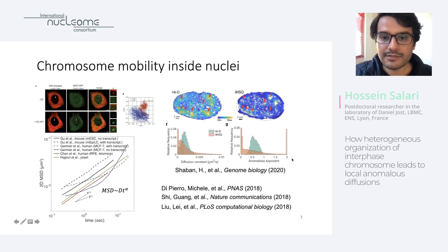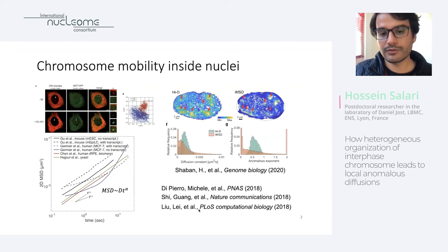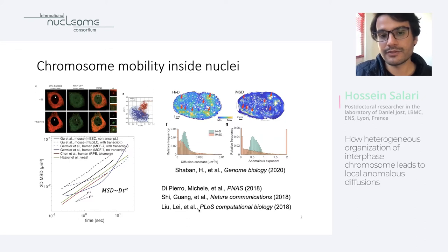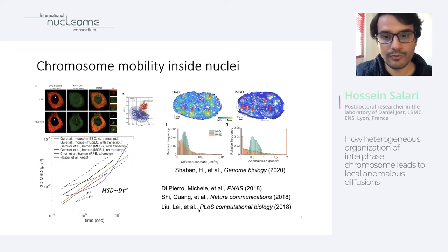Beside these experiments, there is also a lot of theoretical work trying to address this feature of the chromosome. The question is: what is the relation between the heterogeneous structure and the heterogeneous dynamics of the chromosome? Is there any coupling between these two different aspects of the chromosome or not?